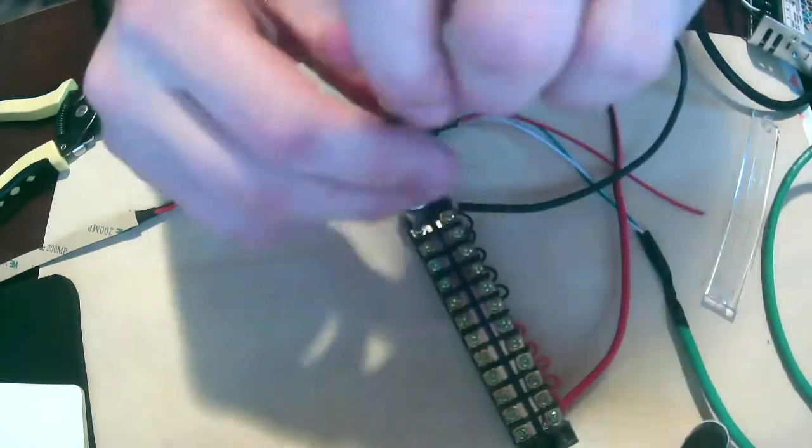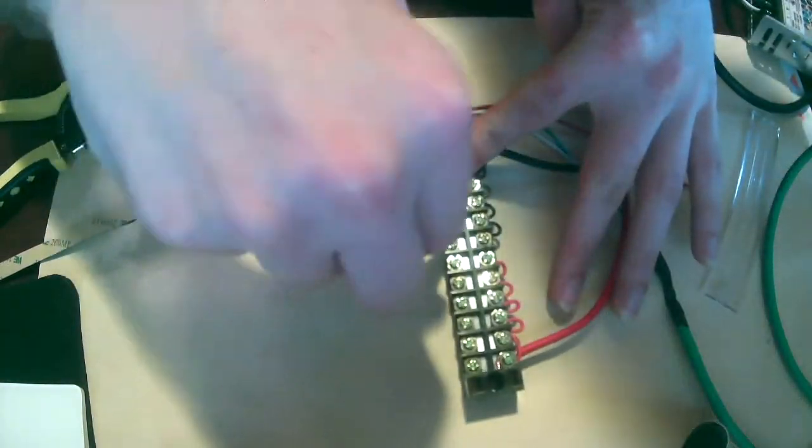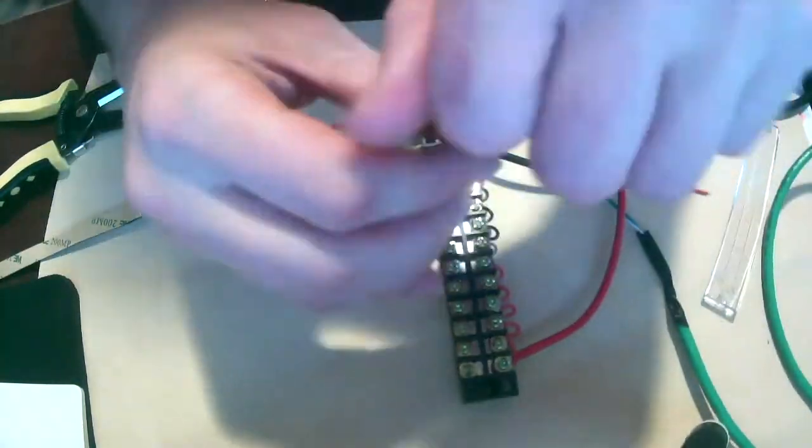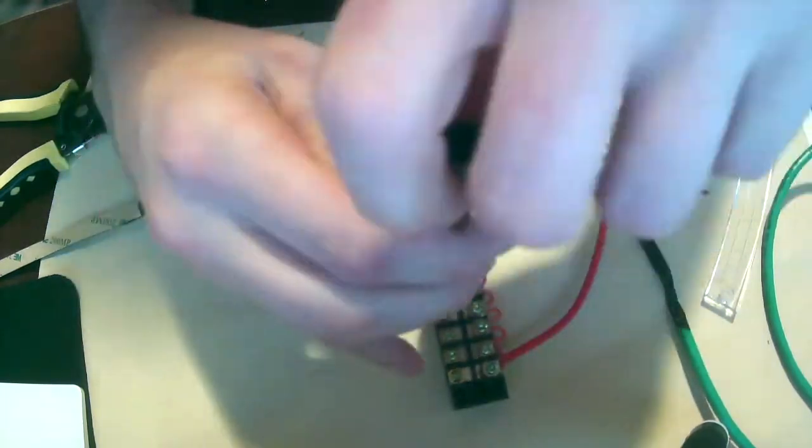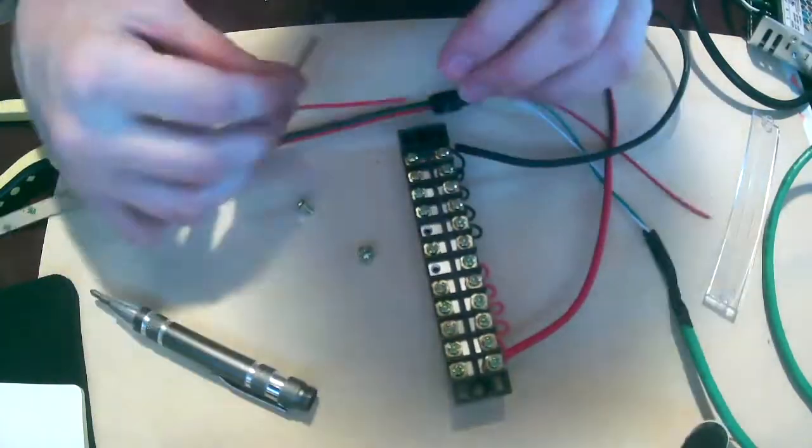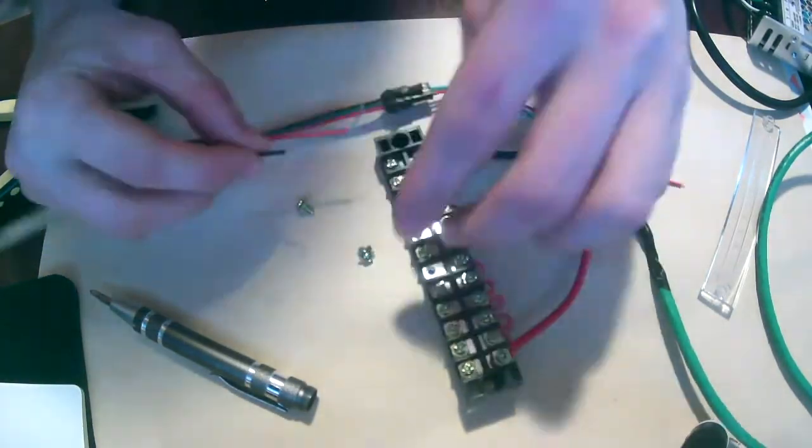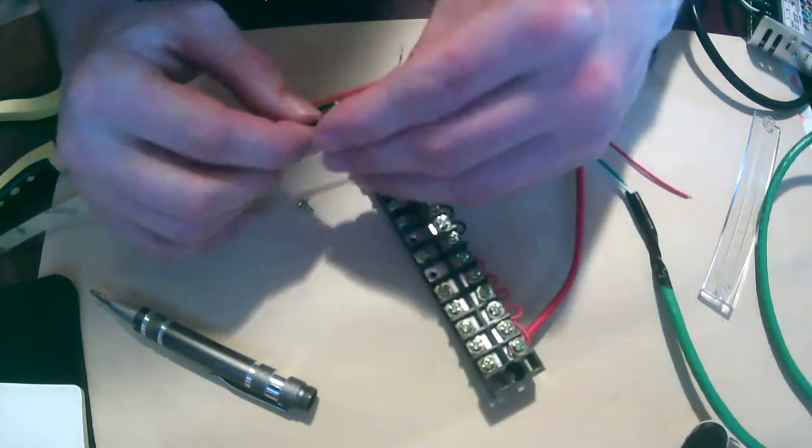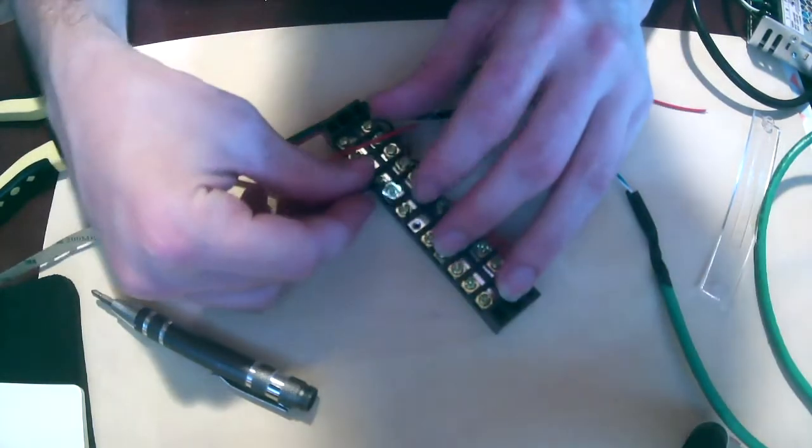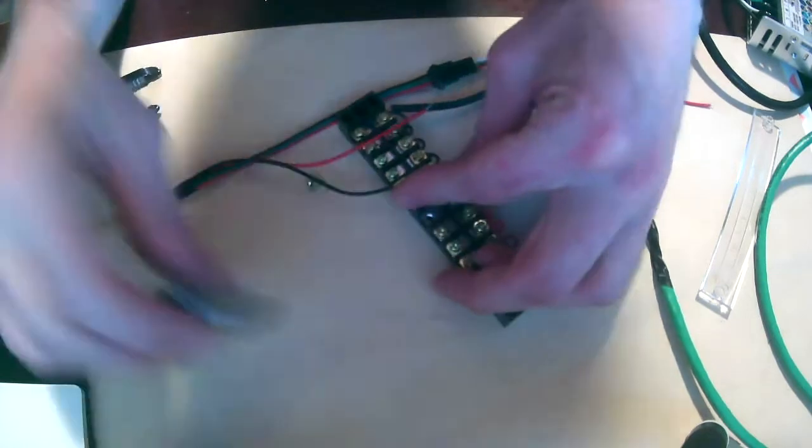We're just going to strip the wires, twist them up, and then connect the red one to one of the red terminal block screws and the black one to one of the black terminal block screws.